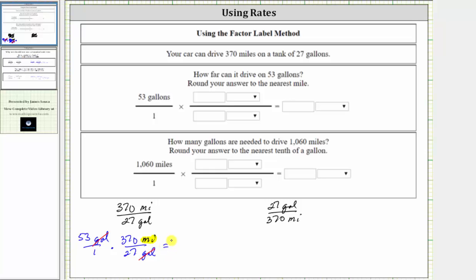Multiplying, in the numerator we have 53 times 370. In the denominator we have 27, and now the units are miles. And now let's go to the calculator, and we're told to round to the nearest mile.